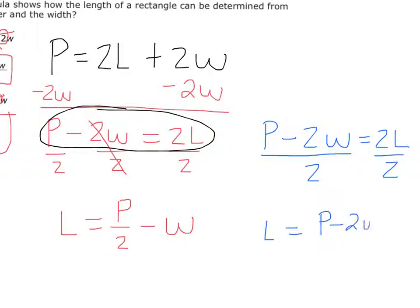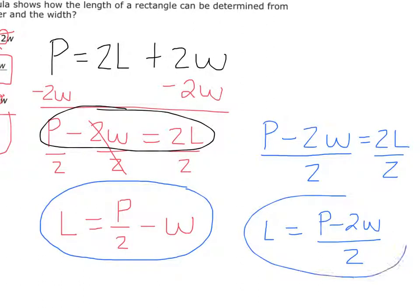And so I'll have L equals what? P minus 2W all divided by 2. Now, I need you to understand that this right here and this right here are exactly the same. Just a little different form.